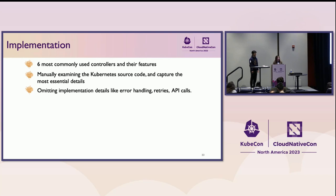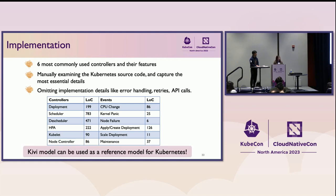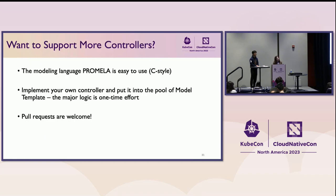We have implemented six of the most commonly used controllers and their features. For each controller, we manually examined the Kubernetes source code and captured the most essential details, omitting implementation details like error handling, retries, API calls, or complex data structures — keeping only the most essential logic. Compared with actual implementations containing tens of thousands of lines of code, our models are much simpler. This also suggests Kiwi can be used as a reference model for Kubernetes. If you want to support more controllers, the modeling language is easy to learn, and pull requests are welcome.